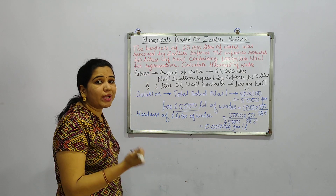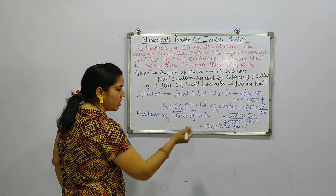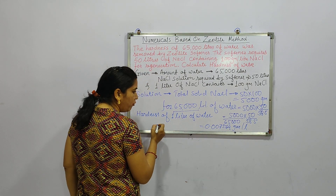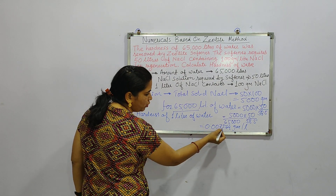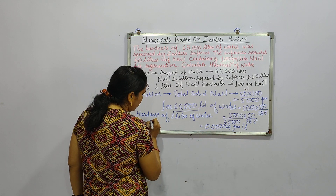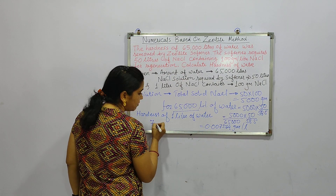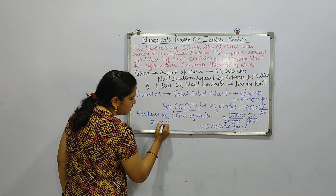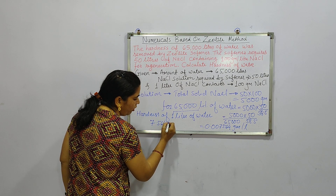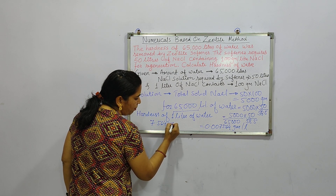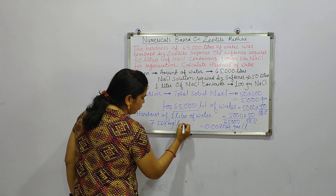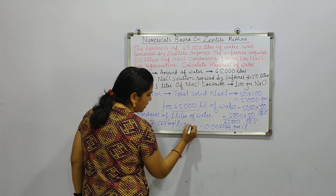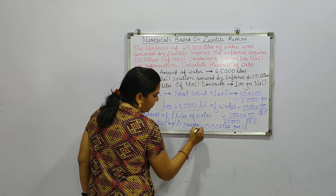If we want to calculate it in milligrams per liter, it can be multiplied by 1000. So moving the decimal, we get 7.564 milligrams per liter, which is also equal to 7.564 ppm. So these are the different units.